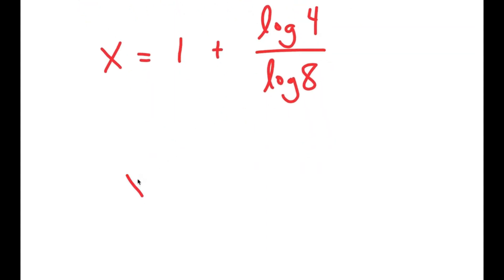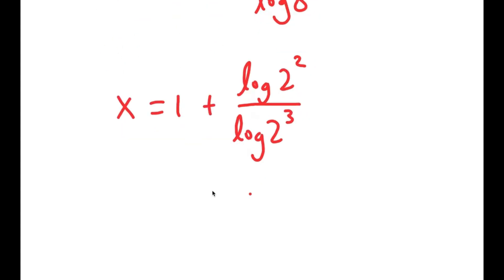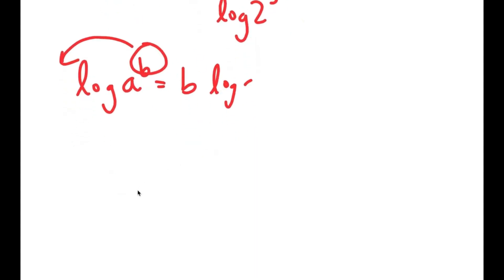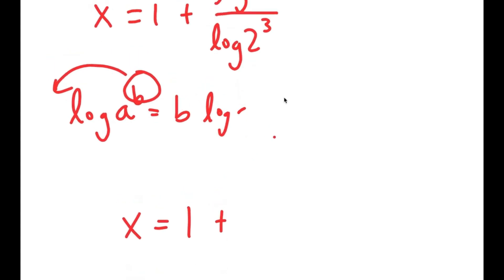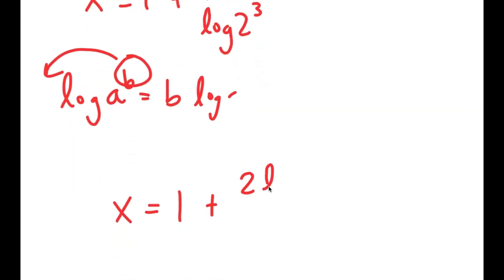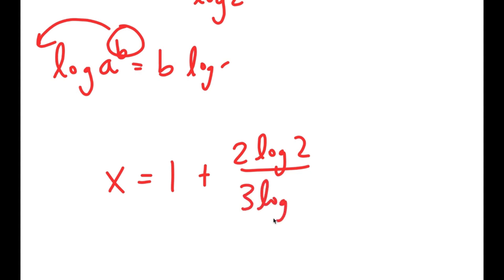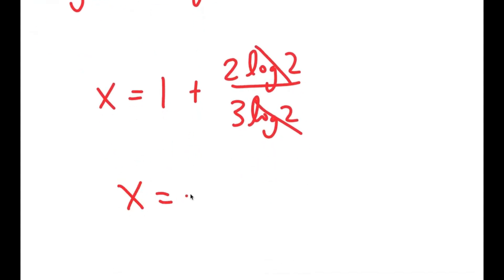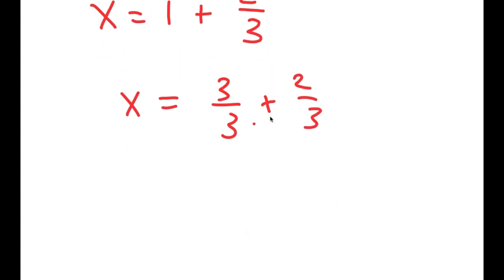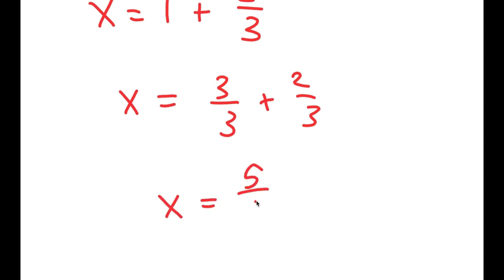Now, log of 4 is the same thing as log of 2 squared, and log of 8 is the same thing as log of 2 to the power of 3. If I have log of a to the power of b, I can move b to the front. So I get x is equal to 1 plus 2 times log 2 over 3 times log 2. These two cancel out, and I get x is equal to 1 plus 2 over 3, which equals 3 over 3 plus 2 over 3, which is 5 over 3. So x is 5 over 3.